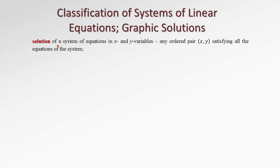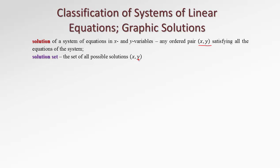What is a solution of a system of equations in x and y variables? Since we have two variables, we need to know both of them to have a solution. So the solutions for systems of equations will be ordered pairs x and y that satisfy all equations in the system. Therefore the solution set is the set of all possible solutions x, y that satisfy each equation in the system.